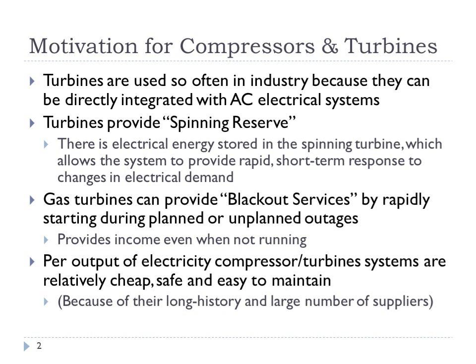Turbines and compressors are used so often in industry because they run directly off of AC electrical systems. A turbine, if you design it correctly, can output three-phase AC electricity. Another reason is that because the turbine is moving in a magnetic field, it can provide something called spinning reserve, where electrical energy can be stored or drawn from the spinning turbine.